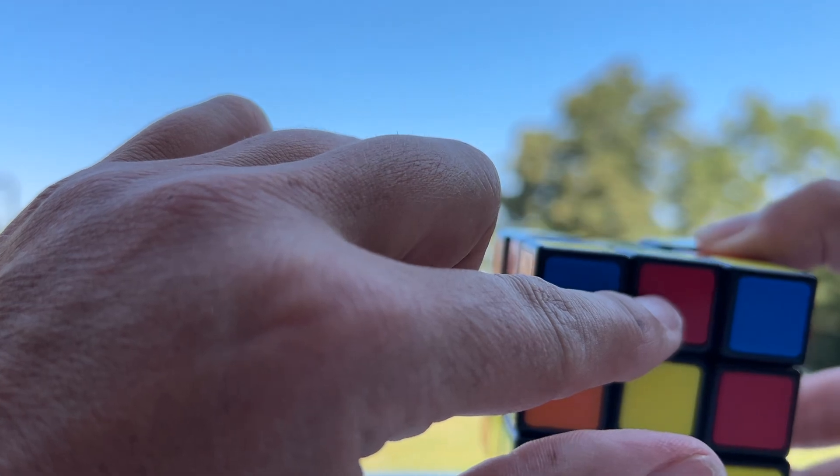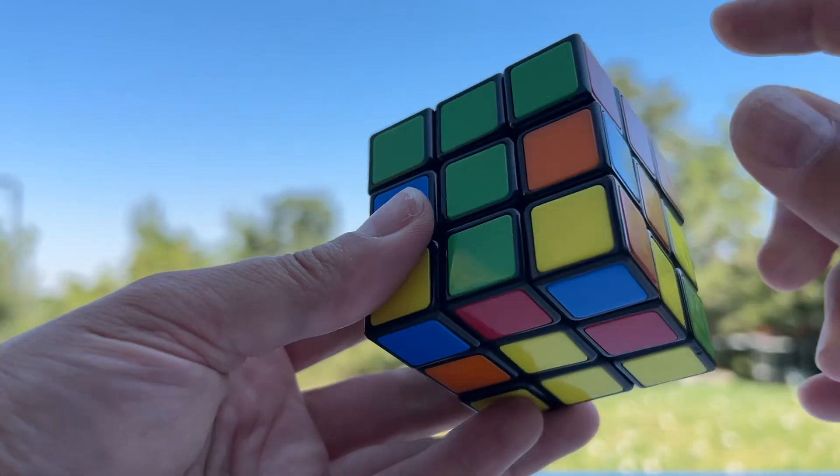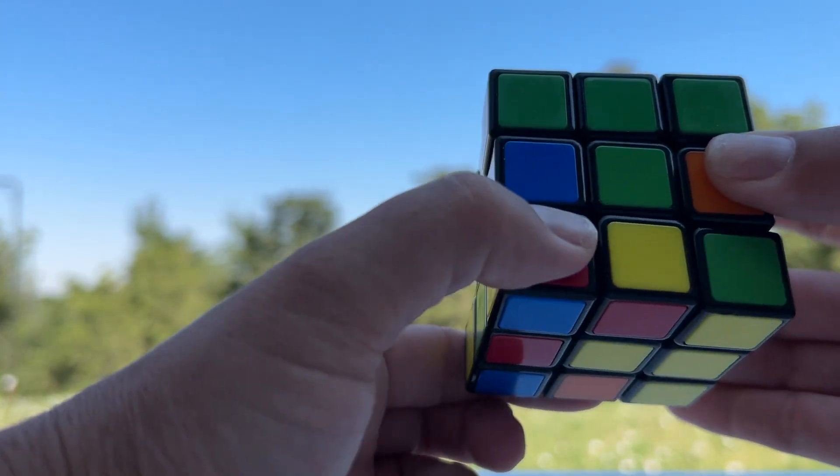Okay so again what was on the bottom? It's red. So first of all we're going to move that piece away from the red side because we want to keep it safe. So we're going to turn the bottom away from the red.